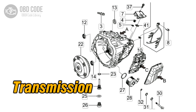The P0729 trouble code indicates that the transmission has detected an incorrect gear ratio in gear 6. This code is typically found in vehicles with automatic transmissions. The ECM or TCM monitors the transmission's gear ratios to ensure they are within the expected parameters.